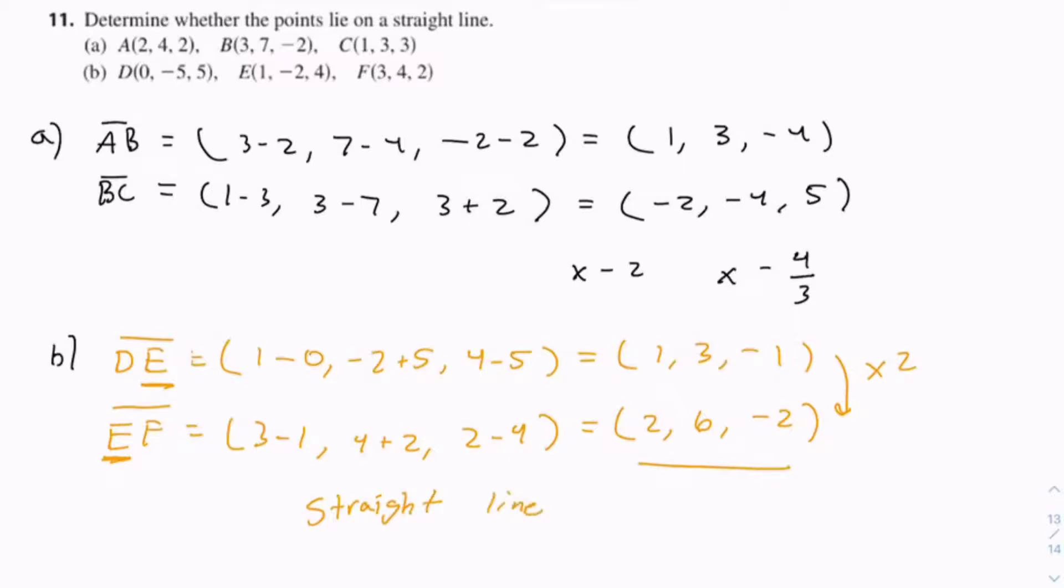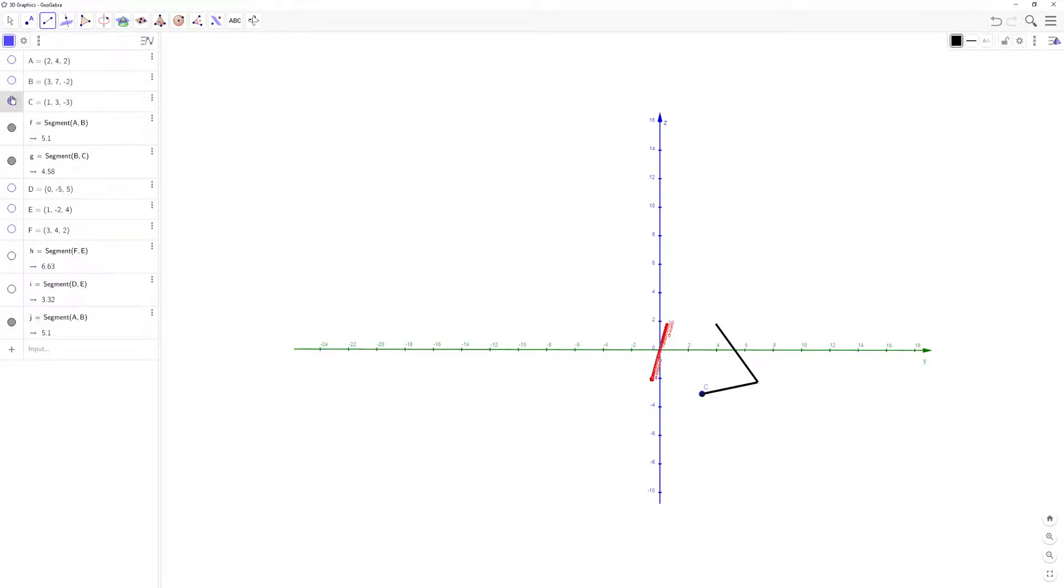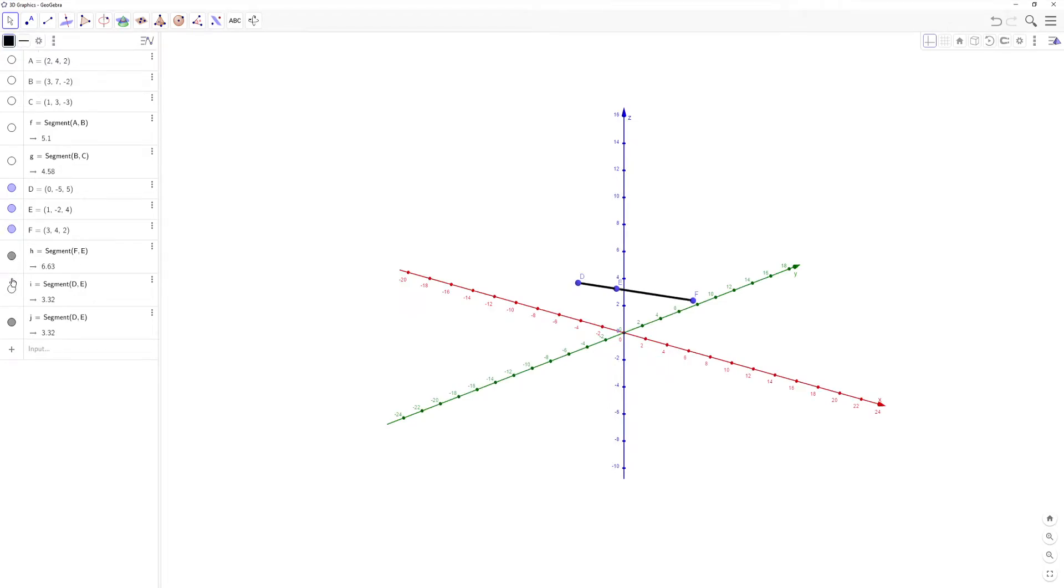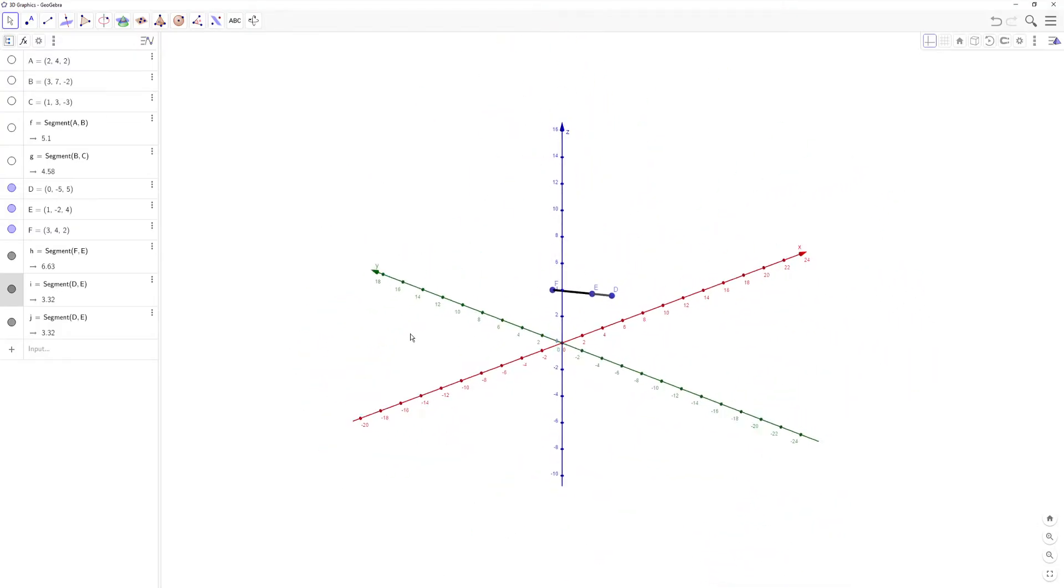And to drive this point home, I'll show you the points on the graph. So let's just hide these. Sometimes this is a little buggy. We have D, E, and F and it creates this segment. And you can see that these points are all on a straight line.